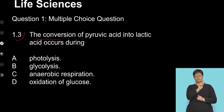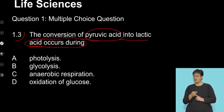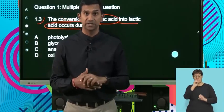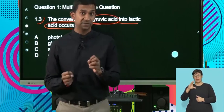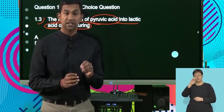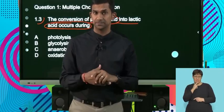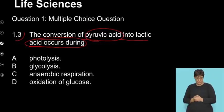Let's move on to 1.3. The conversion of pyruvic acid into lactic acid occurs during. We've looked at the process of cellular respiration. We know that during anaerobic respiration, we find that in animal cells, the pyruvic acid can be converted into lactic acid, producing some energy. Let's look at the options.